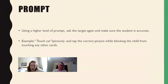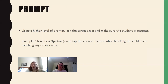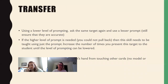The first step is prompt. As we talked about with the prompt hierarchy, you're going to use a higher level of prompting and ask the target again, making sure the student is accurate. For example, if the target is 'touch car,' you might tap the picture — that's modeling what you want them to do — and you're going to block the child's hand from touching any other card. This makes it errorless because you're forcing them to get it right.